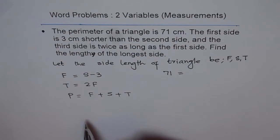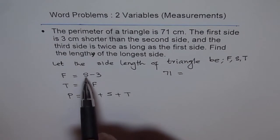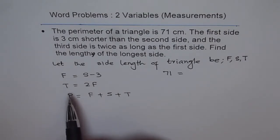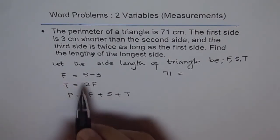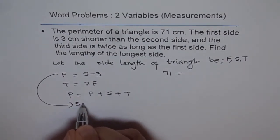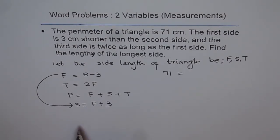We can write each variable in terms of one variable. We know T in terms of F, and F equals S minus 3, so we can also write S in terms of F as S equals F plus 3. That way everything will be in terms of F, which makes it easy to calculate.